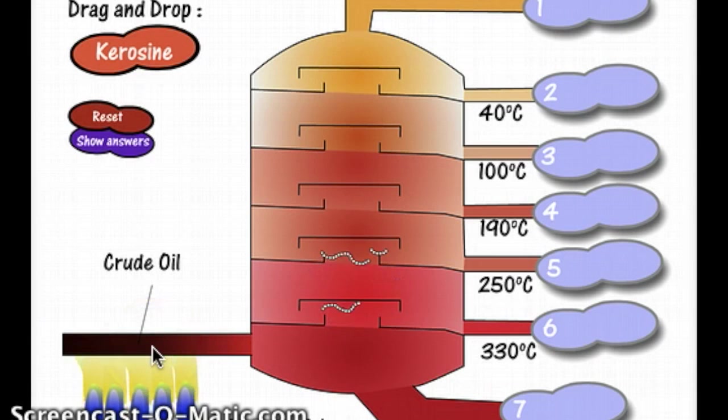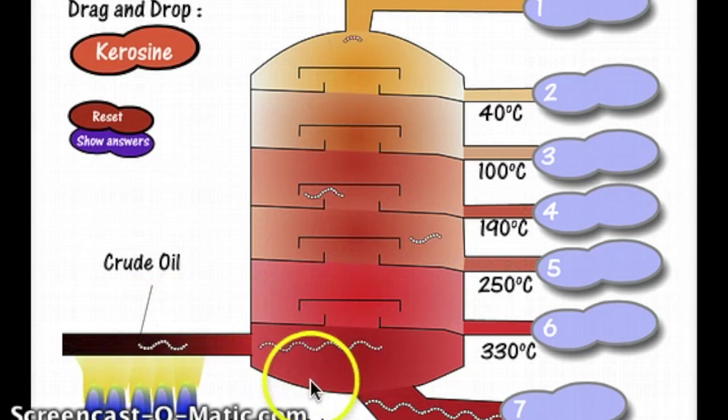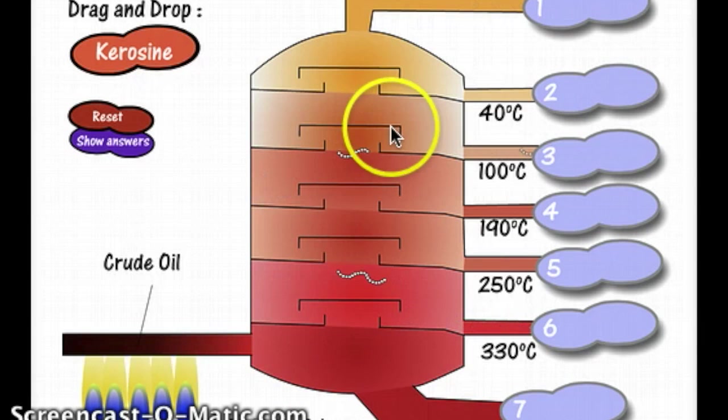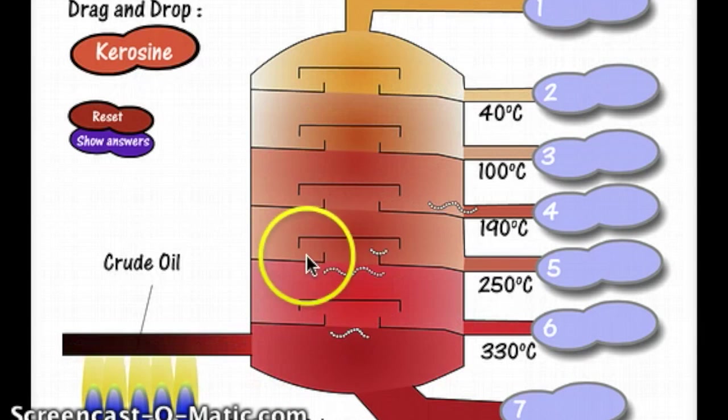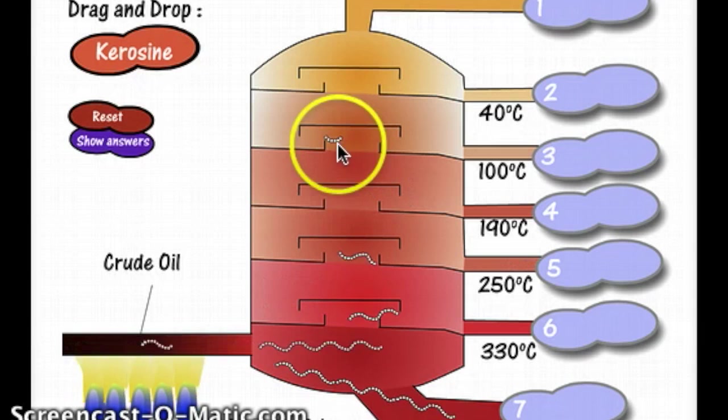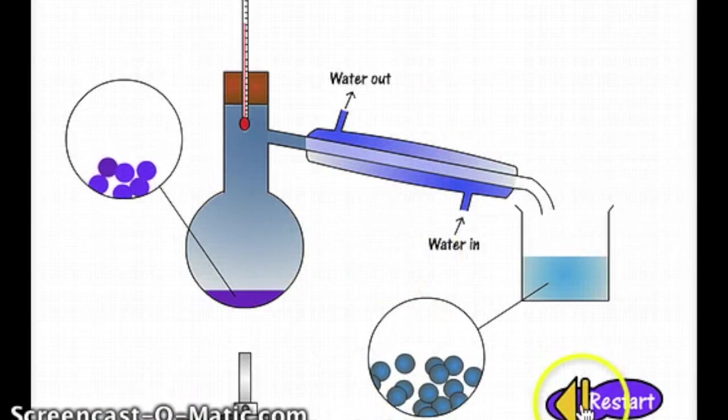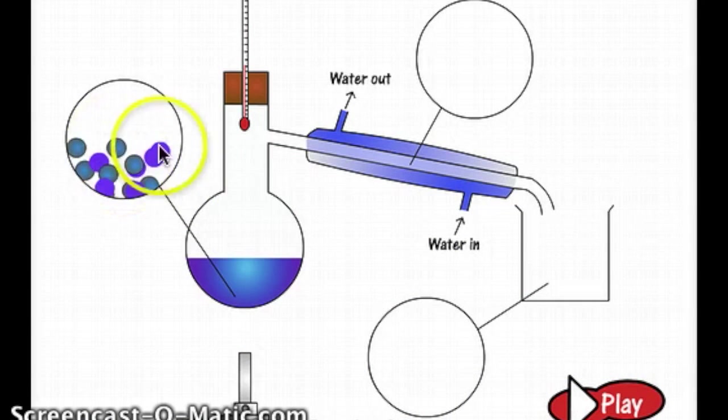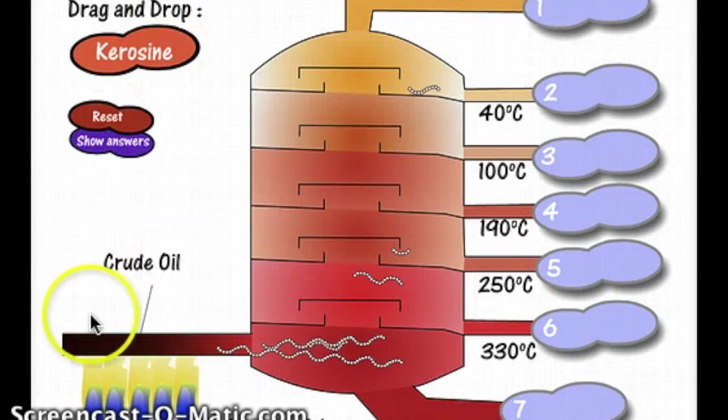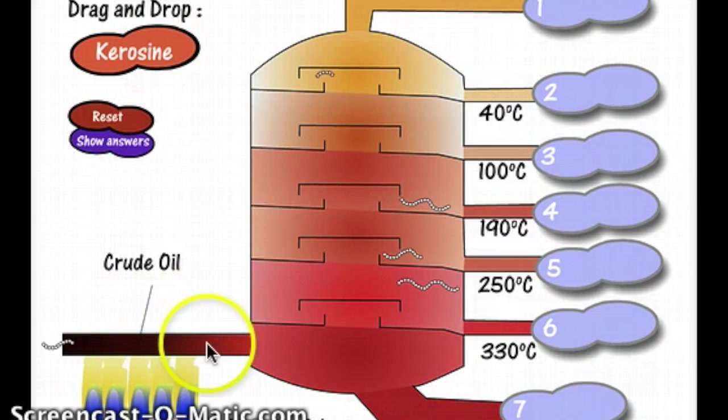In comes our crude oil with all sorts of different hydrocarbon chains. Here's a really long one, here's a shorter one, and there are some really short chain hydrocarbons traveling all the way up. If you remember, it's intermolecular forces that are holding these together - that's what makes it a liquid. The same here: this starts off as a liquid, and what's holding the chains together is intermolecular forces.